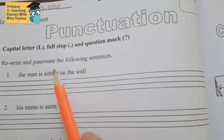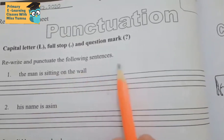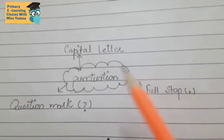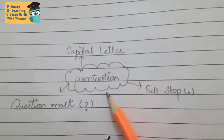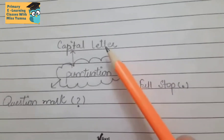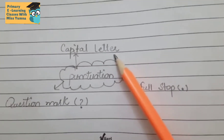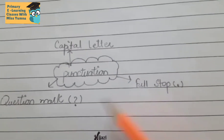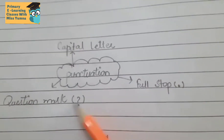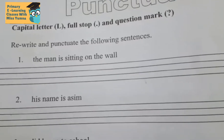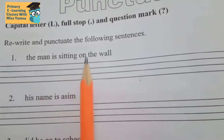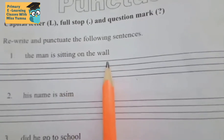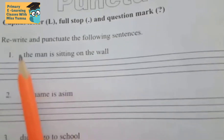Rewrite and punctuate the following sentences. Here are the punctuation marks: every sentence begins with a capital letter and ends with a full stop or a question mark. Okay, look at the following sentence, we will punctuate it.